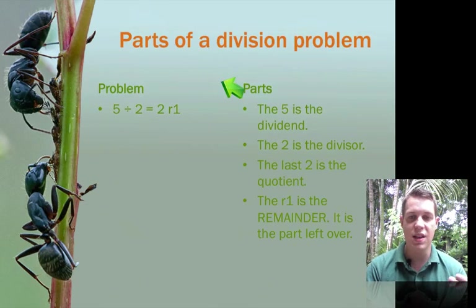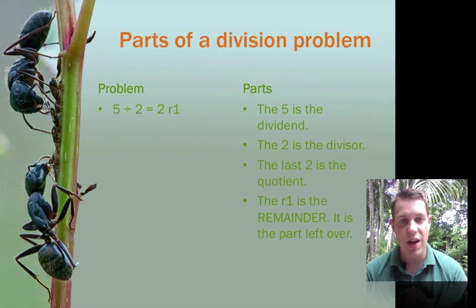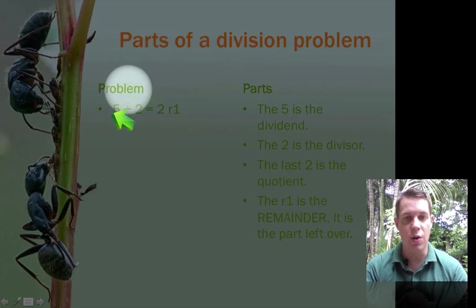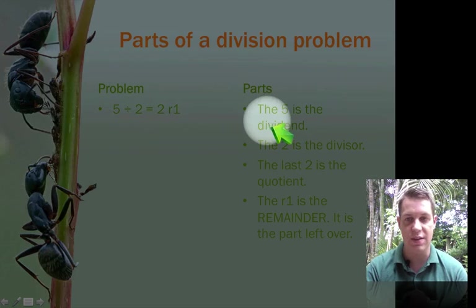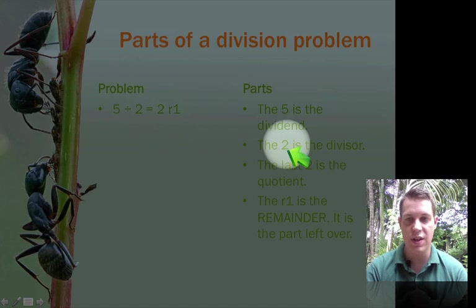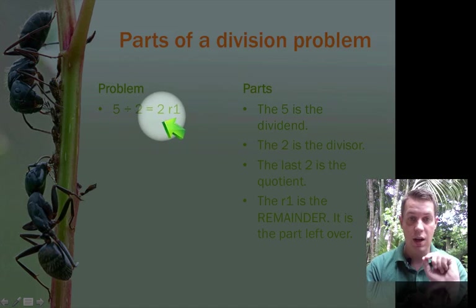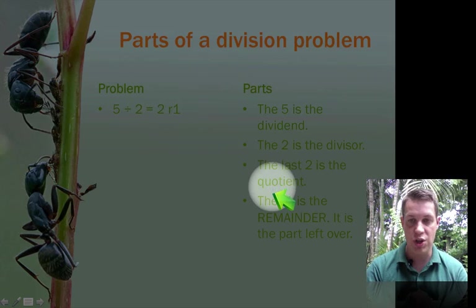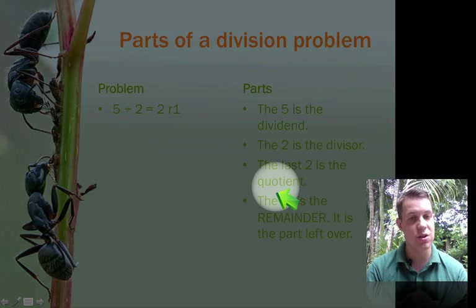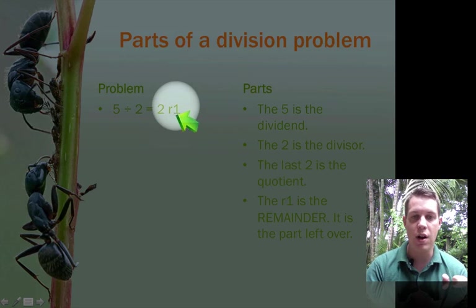Now, that's pretty easy to see when we're playing around with the aphids and ants. But now we have a new part to division problems. So we already know that the 5 is the dividend. That's the total we started with. The 2 is the divisor, which is how many groups we're going to make. This 2 is the quotient, which is our answer to the division problem. How many things will go in each group.